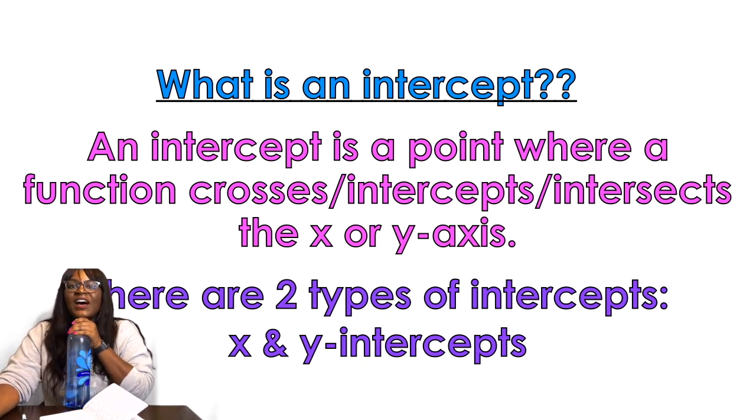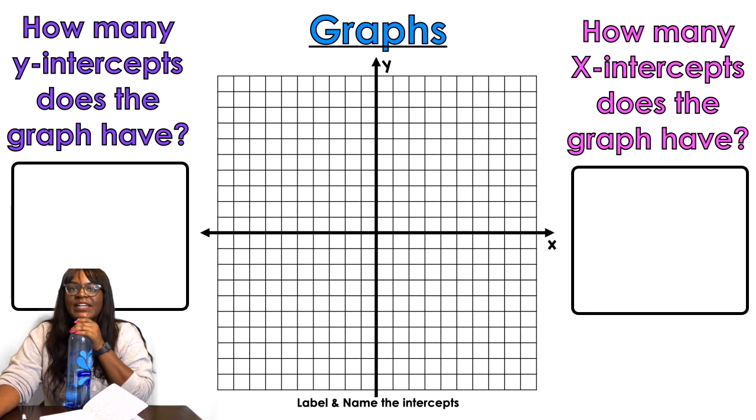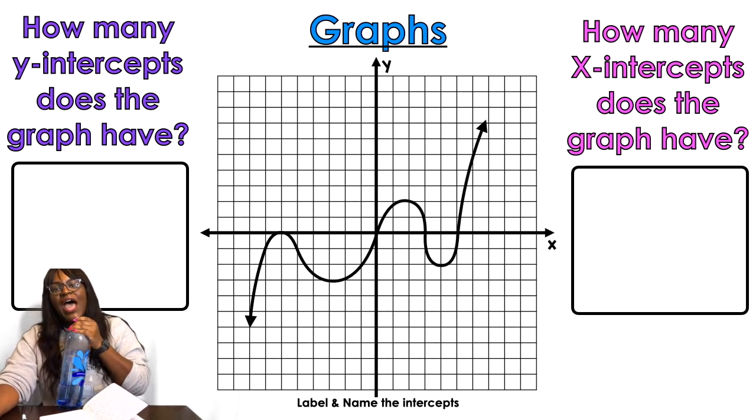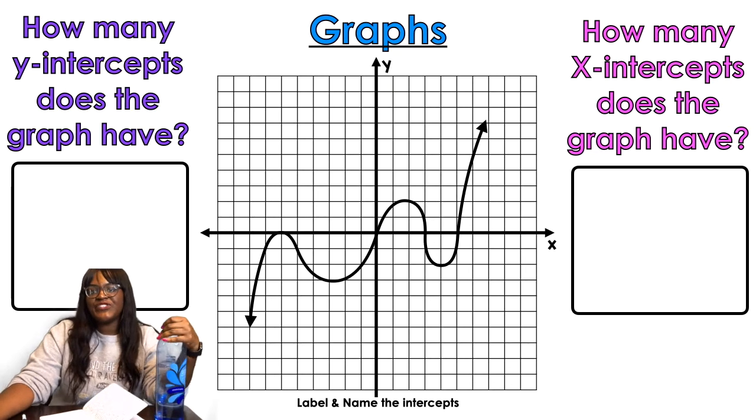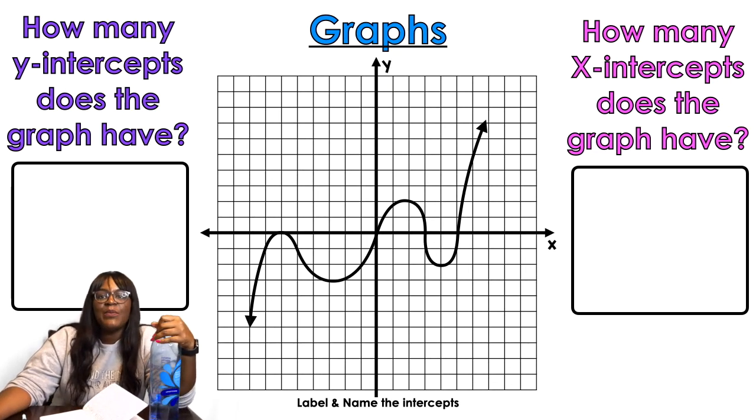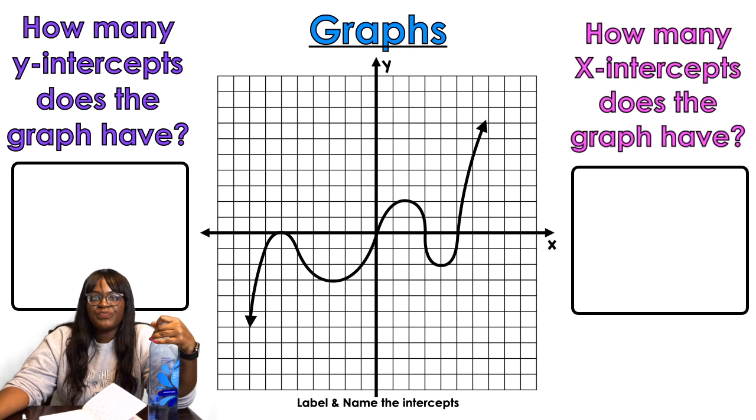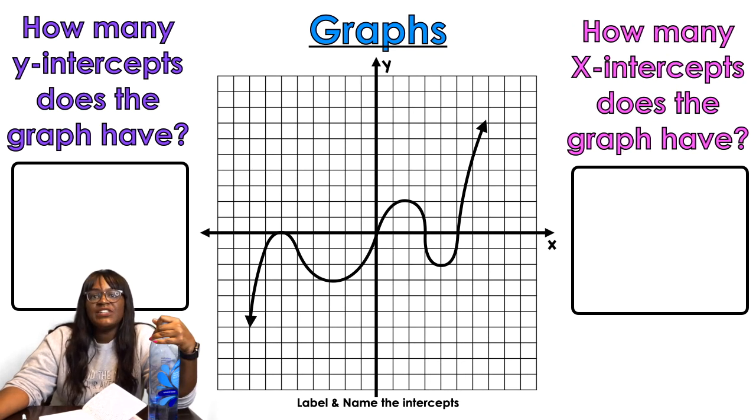So basically, I'm just gonna ask you a question. I will give you a graph. Let's say you have a graph like this. I basically want to know how many y-intercepts does the graph have, so that means how many times does this graph touch the y-axis? And I'm also gonna ask how many x-intercepts does the graph have, so how many times does this graph touch the x-axis.